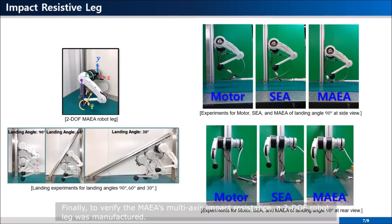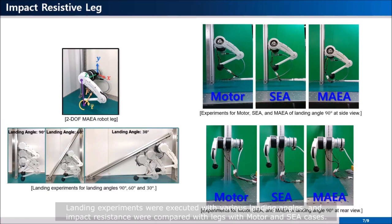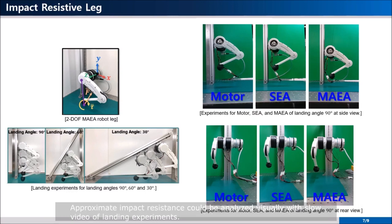Finally, to verify the MAEA's multi-axis impact resistance, a 2DOF robot leg was manufactured. Landing experiments were executed with various landing angles. And impact resistance were compared with legs with motor and SEA cases.